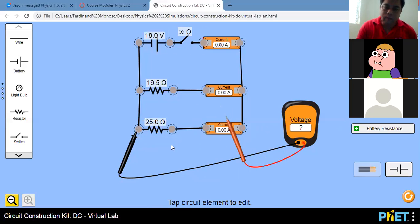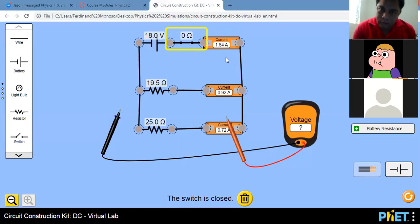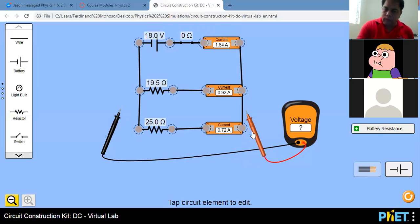So we will now have R1 to be 19.5 and R2 to be 25. So let's remove our voltmeter first. Now we will turn on our circuit and check our current. So this time our total current is 1.64 amperes. Our I1 is 0.92. Our I2 is 0.72. You get that one? Can I hear some sound?